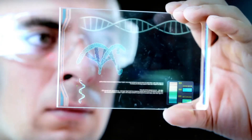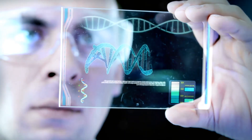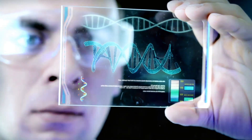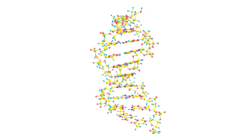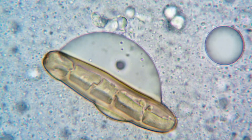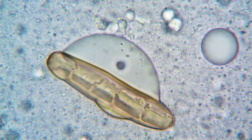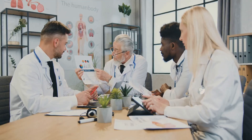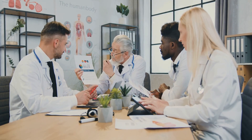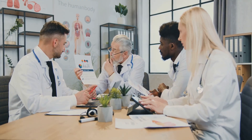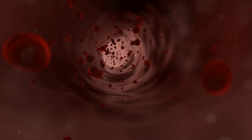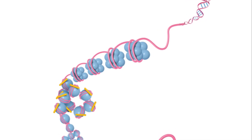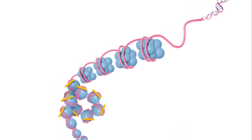DNA, or deoxyribonucleic acid, is the molecule that carries genetic information. It is composed of two strands that coil around each other to form a double helix. DNA is found in the nucleus of almost every cell in our body. Genes are segments of DNA that contain instructions for building proteins, which perform various functions in the body. Each gene has a specific location on a chromosome, which is a long DNA molecule wrapped around proteins.